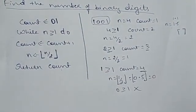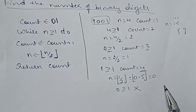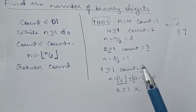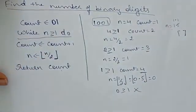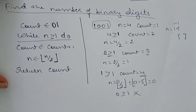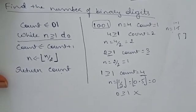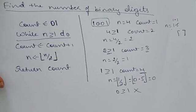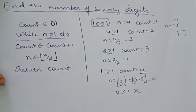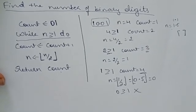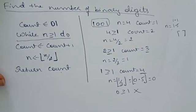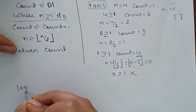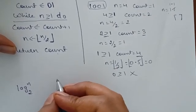You might ask: to take a summation we need a lower and upper bound, but this algorithm has a while loop, not a for loop. In such cases, for non-recursive algorithms with a while loop, we need a different approach. We must consult the order of growth table and determine the appropriate order of growth.